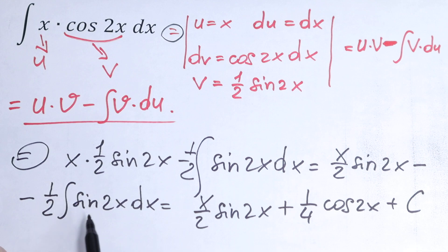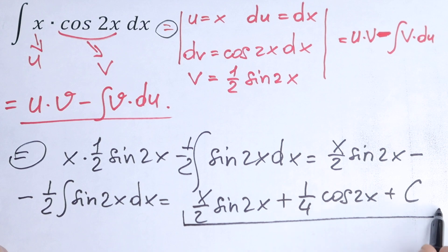Because the integral of sine will be minus cosine, we put minus right here and multiply by one-half. Because we have 2 in our sine. And this will be our answer.